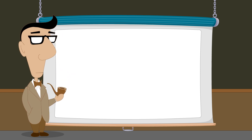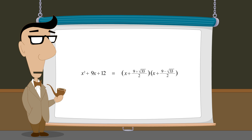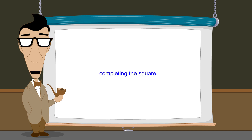In addition, some quadratics are impossible to factor by inspection, such as the example we saw in the lecture Factoring Quadratics by Inspection, Part 1. Over 1,000 years ago, problems like this prompted mathematicians to search for a technique that could be used to solve any quadratic equation. The breakthrough was the development of a technique called Completing the Square, which we will introduce in the next lecture.